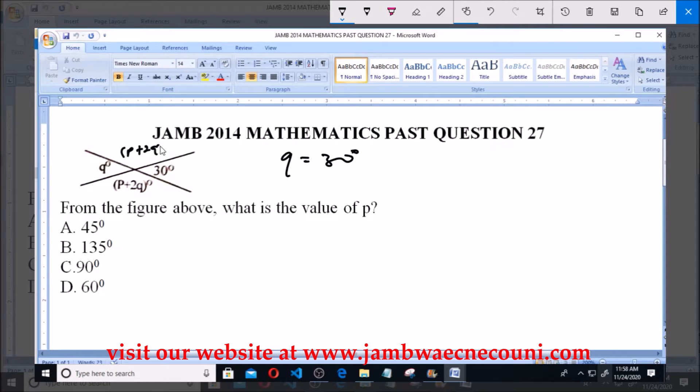Here also will be p plus 2q. Now since q is 30°, here will be p plus 2 times 30, which is equal to p plus 60°. Now this entire angle here, the sum of this entire angle is equal to 360° because it's angle at the point.